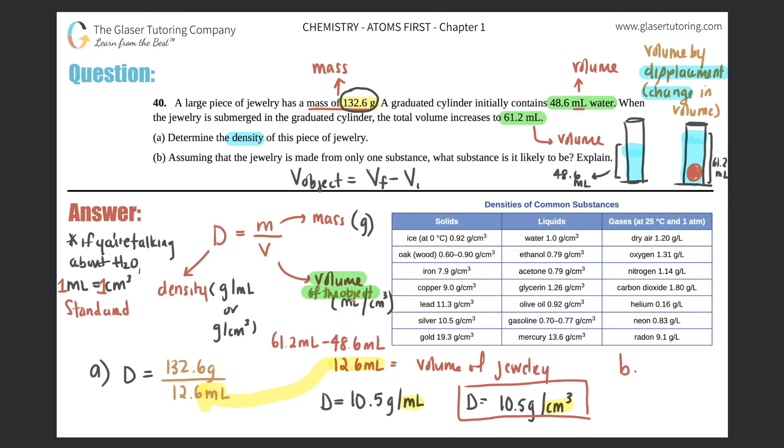Now for letter (b), it says, assuming that the jewelry is made from only one substance, what substance is it likely to be? Explain. This is where we use our densities of common substances list. Now let's think: are we going to use solids, liquids, or gases? Well, it's a piece of jewelry, and jewelry only exists as a solid, so we could get rid of this liquid column and we can get rid of this gas column.